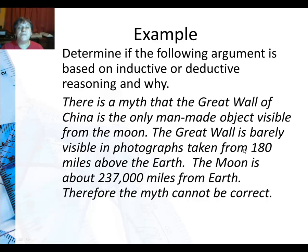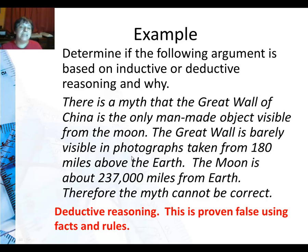So they're saying if it's barely visible at 180 miles and you go a thousand times further there's no way for this to be true. Now they didn't use observation. They didn't go to the moon. They used the facts that they already had from the photographs. And those are facts. So this is deductive reasoning. It's proven false using facts and rules.